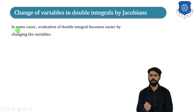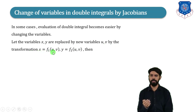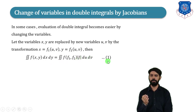In some cases, evaluation of a double integral becomes easier by changing the variables. Let the variables x and y be replaced by new variables u and v by the transformation x = f1(u, v) and y = f2(u, v). Then the double integral of f(x, y) dx dy equals the double integral of f(f1, f2) times the modulus of J, du dv. Call this equation number 1.